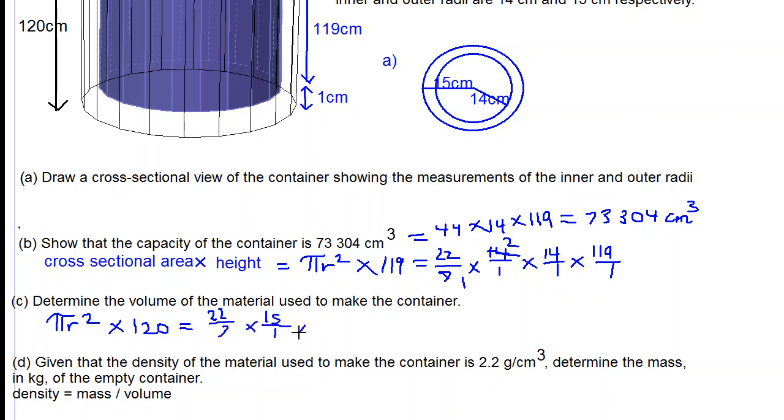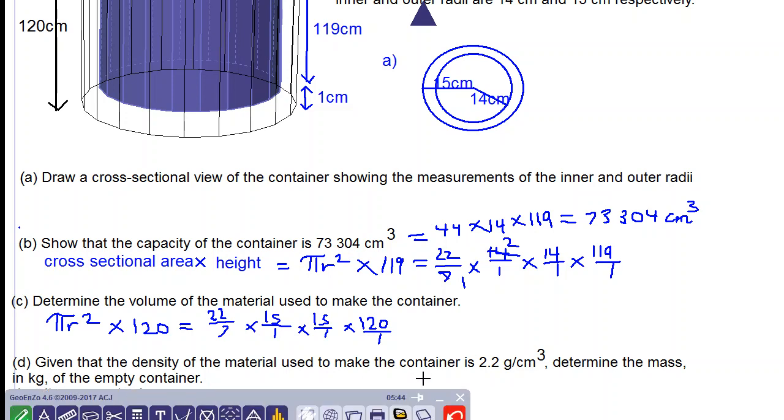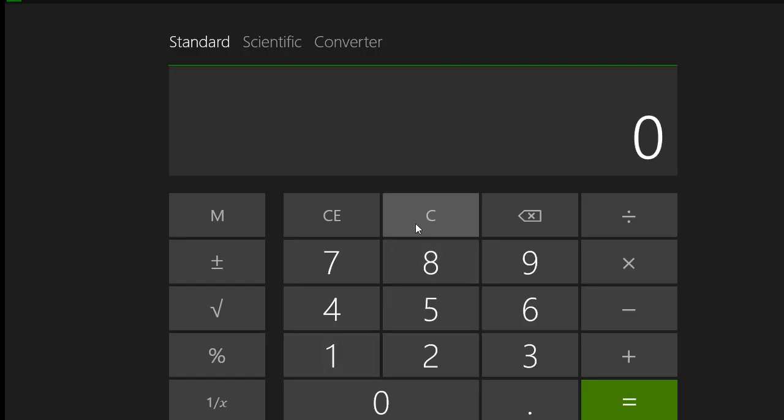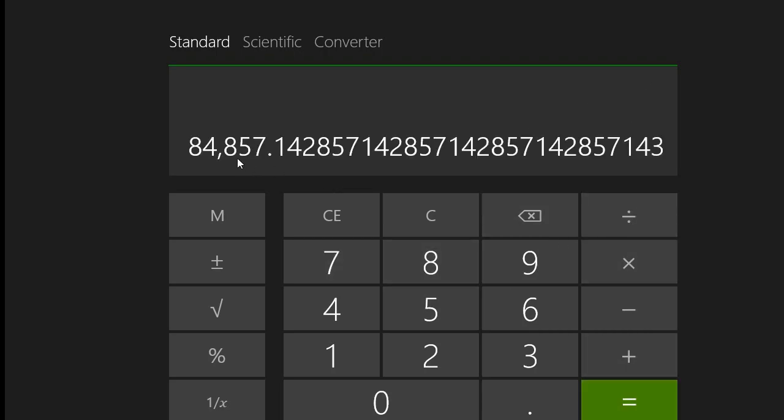Pi is again 22/7 and radius is 15. We multiply 22/7 × 15² × 120. We work this out in our calculator. 22 times 15 times 15 times 120 divided by 7 equals 84,857.142, which we round off to the nearest whole number: 84,857 cm cubed.